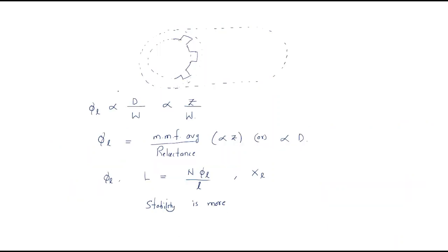Now let's look at the stator construction diagram. The stator looks like this — the outer part of the stator is on the outside, and the remaining is the inner part of the stator. The slots visible here are called open type slots.